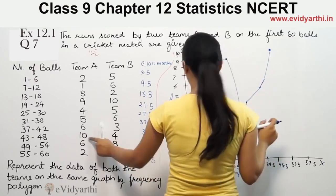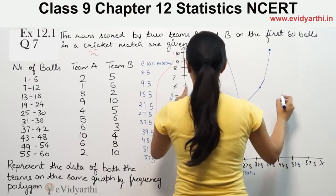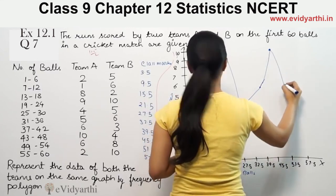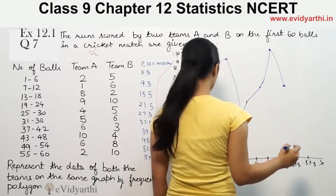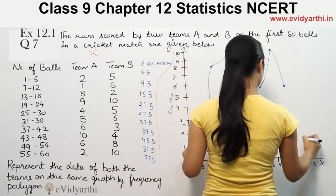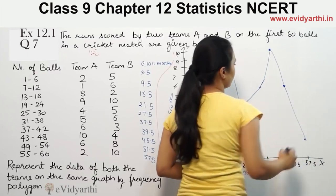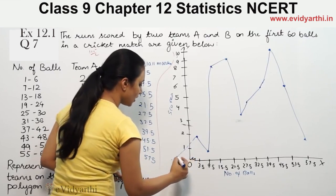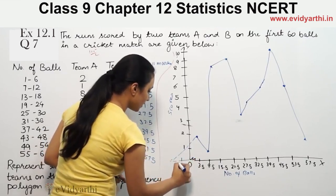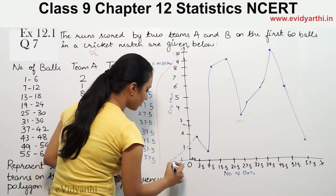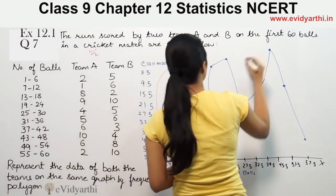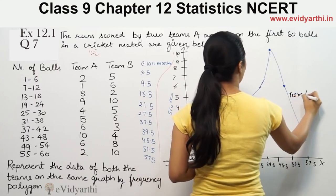Then 51.5 goes to 6, and 57.5 goes to 4. That completes the plotting for Team A.